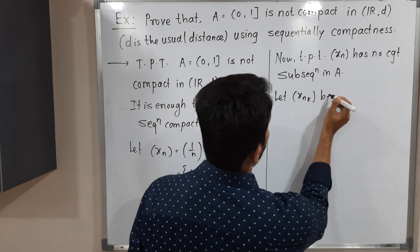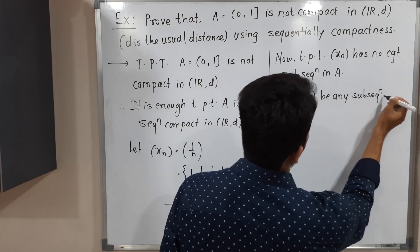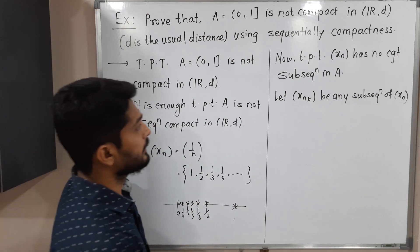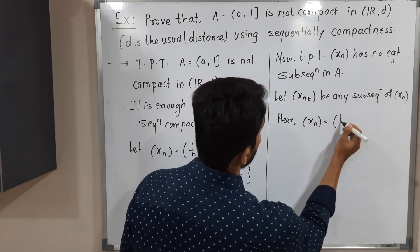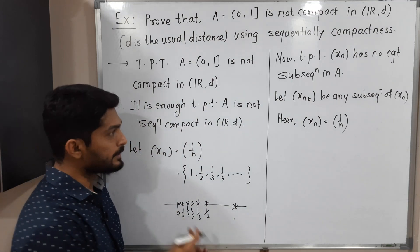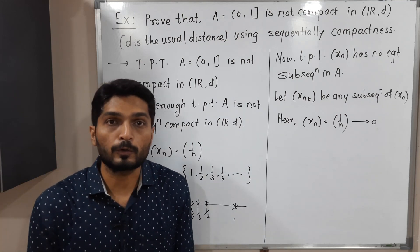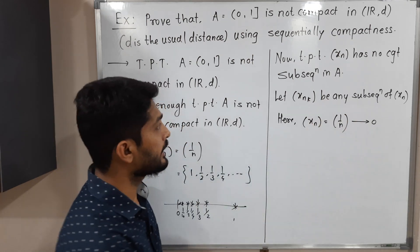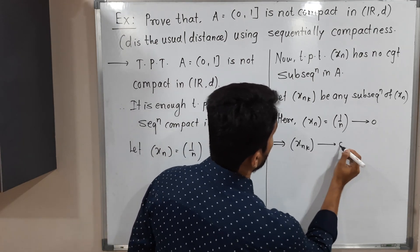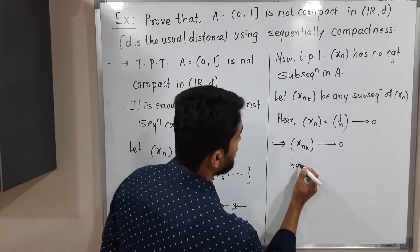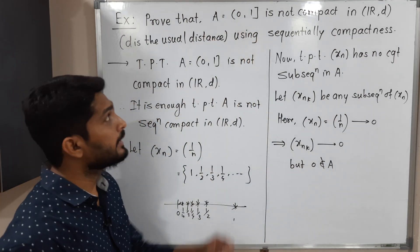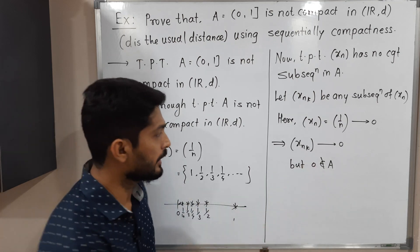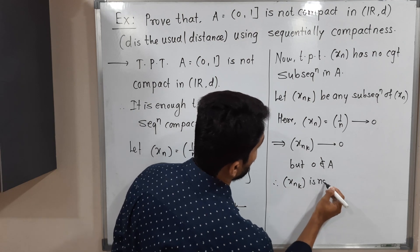Let Xₙₖ be any arbitrary subsequence of Xₙ. We have to prove it is not convergent in A. Since Xₙ = 1/n is convergent and converges to 0, if the original sequence is convergent then its subsequence is also convergent and converges to the same point. So Xₙₖ also converges to 0. But 0 does not lie inside set A, since A is open at 0 — A does not contain the point 0.